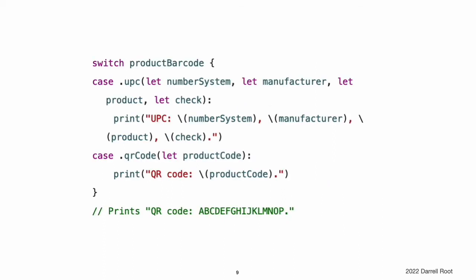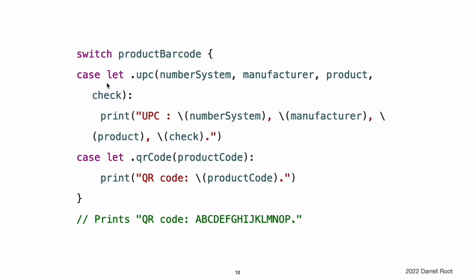You can check the different barcode types using a switch statement, similar to the example in Matching Enumeration Values with a Switch Statement. This time, however, the associated values are extracted as part of the switch statement. You extract each associated value as a constant with the let prefix, or a variable with the var prefix, for use within the switch case's body. If all of the associated values for an enumeration case are extracted as constants, or if all are extracted as variables, you can place a single var or let annotation before the case name for brevity.